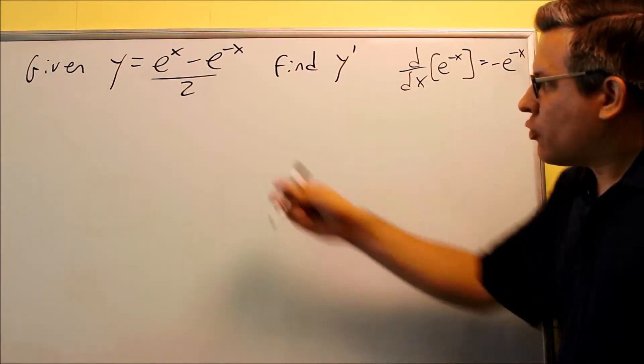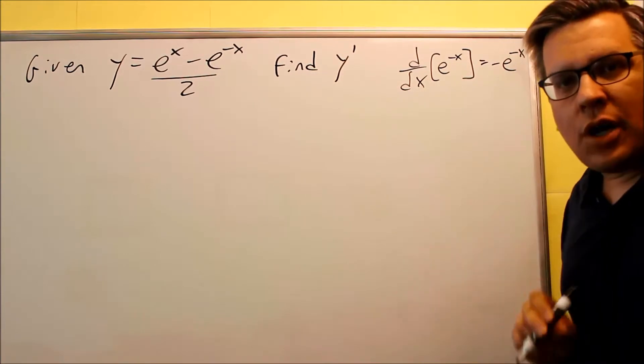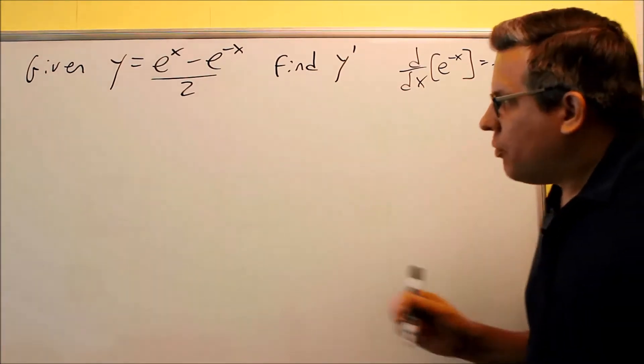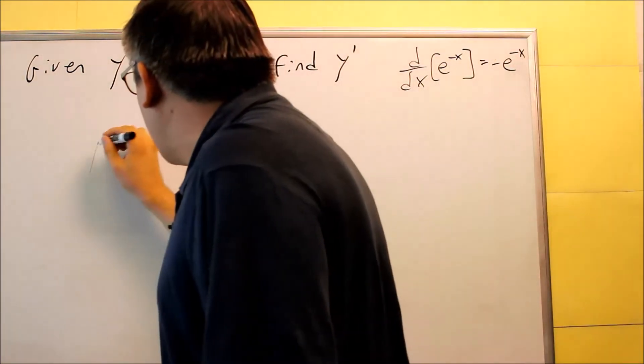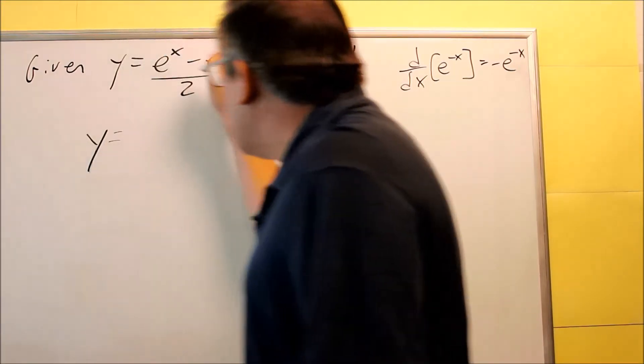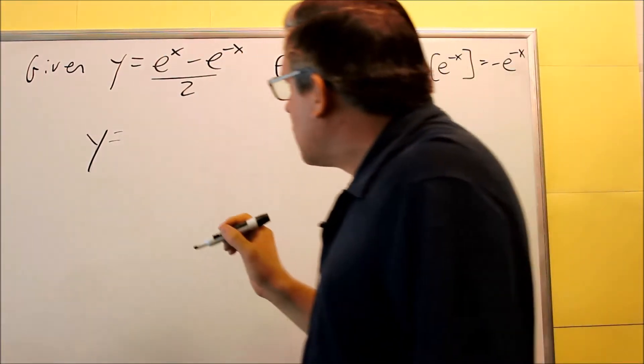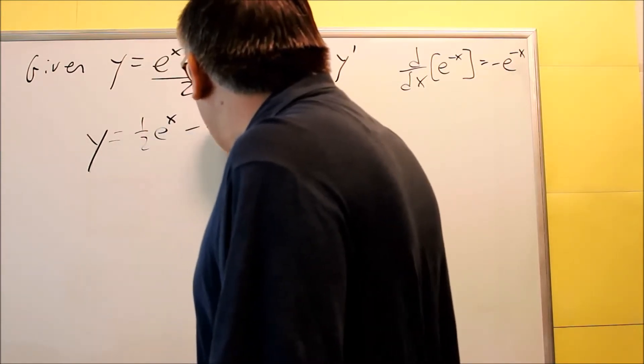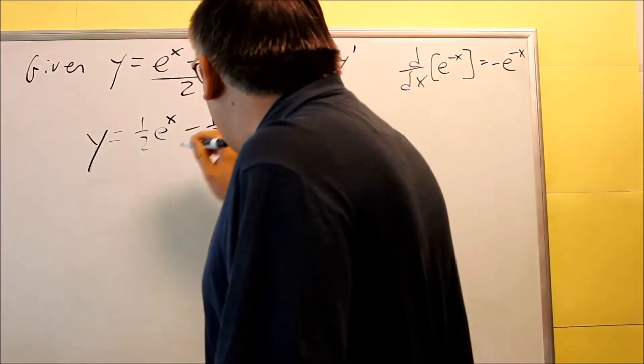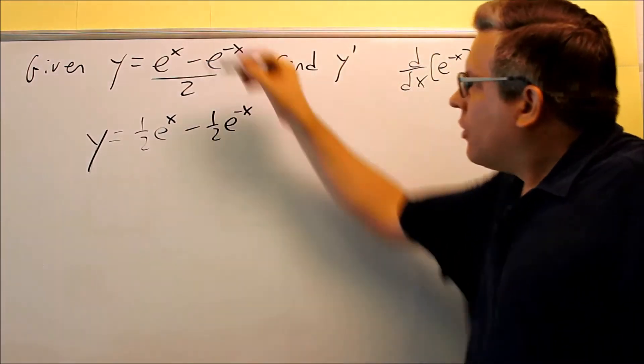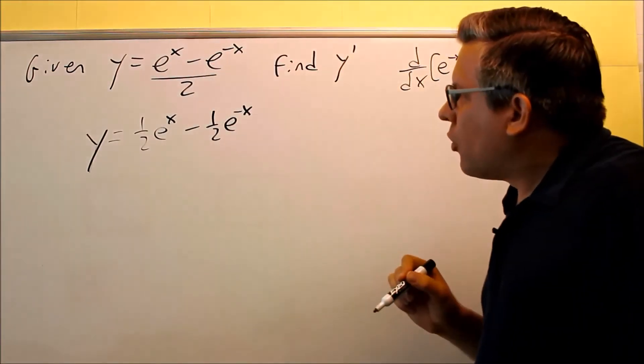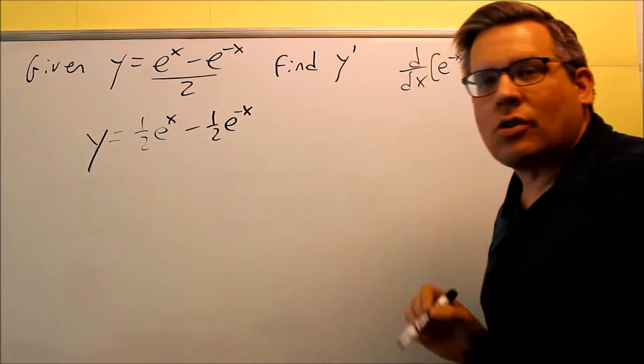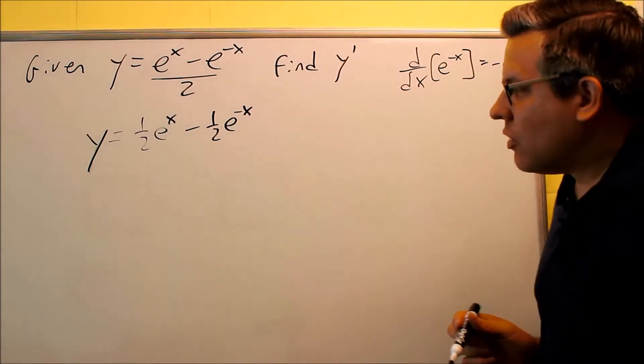What we're first going to do is we need to separate that. Now, we could do that by quotient rule, but this is one where you can make the problem a little bit easier by dividing each of those by two. So in fact, what will happen is I get a one-half e to the x minus a one-half e to the negative x. Both of them, there's a one on top of both of those. We're splitting up the fraction, and you can split it up into that one.